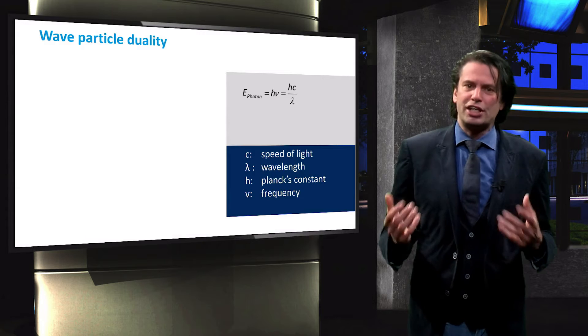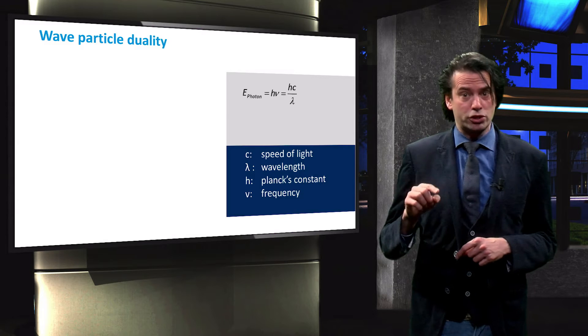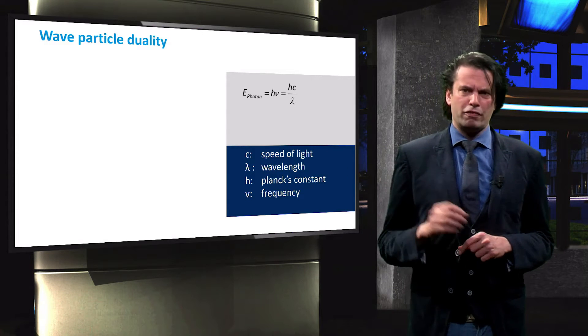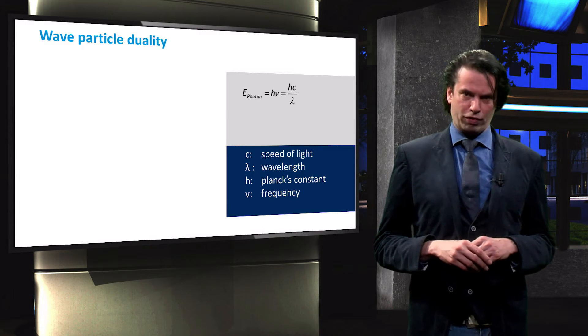The energy of a single quantum is described by the product of its frequency and Planck's constant. The photon frequency is related to its wavelength through the speed of light.